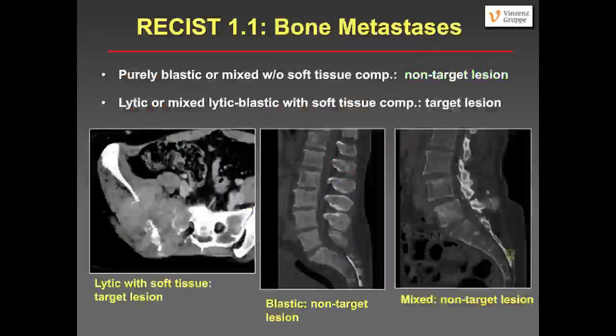What about bone metastases? With RECIST 1.0, you could not include bone metastases as a target lesion. Now with RECIST 1.1, you can, if they are lytic or mixed lytic/blastic and have a very important soft tissue component — then they qualify as a target lesion. A big osteolytic lesion in the pelvis with a large soft tissue component qualifies as a target lesion. Whereas purely osteoblastic lesions or mixed lesions without a soft tissue component should be included as non-target lesions but not measured as target lesions.